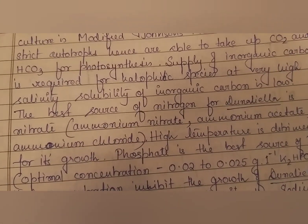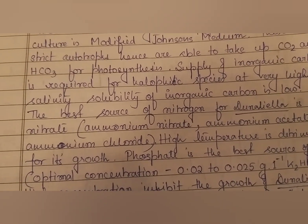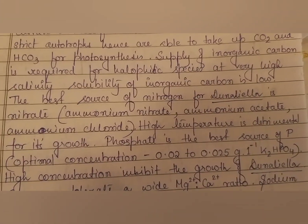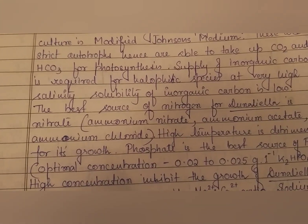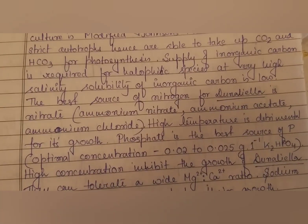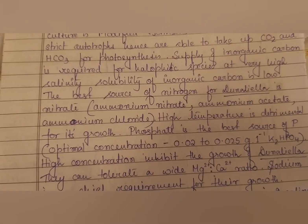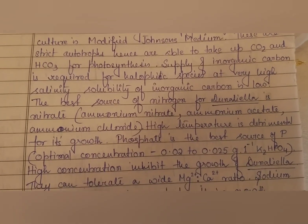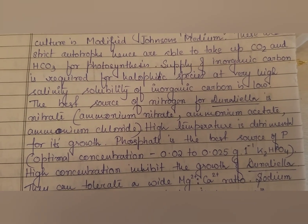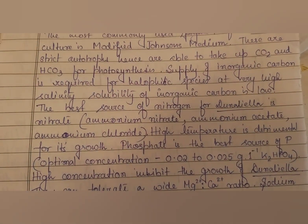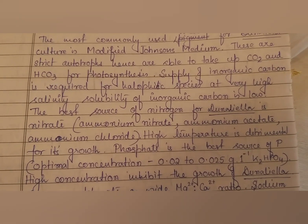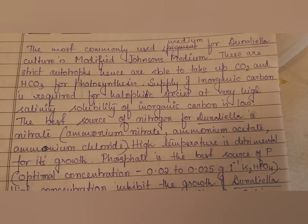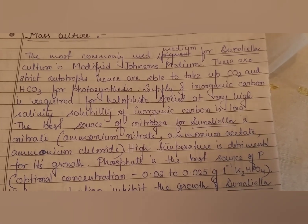The best source of nitrogen for dunaliella is nitrate — that is, ammonium nitrate, ammonium acetate, or ammonium chloride. High temperature is detrimental for its growth and can cause death of the organism. Phosphate is the best source of phosphorus, with an optimal concentration of 0.02 to 0.025 grams per liter of K2HPO4.